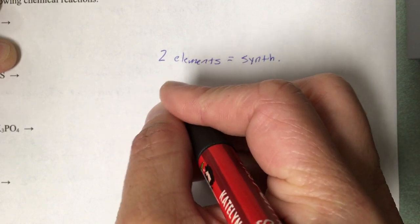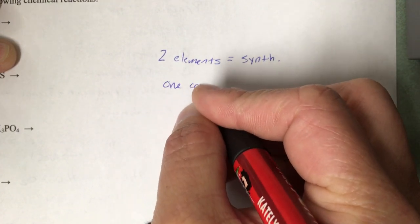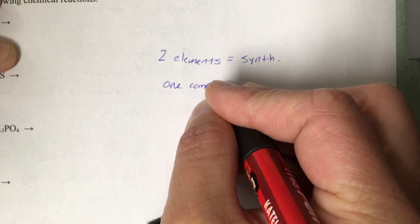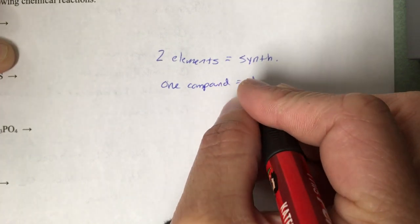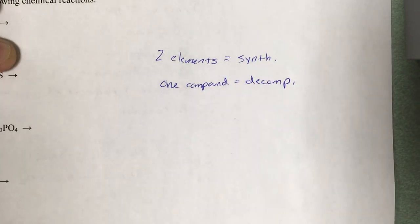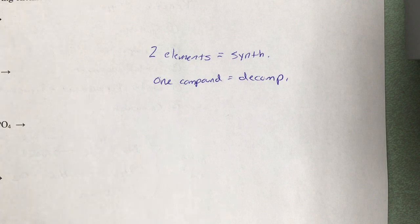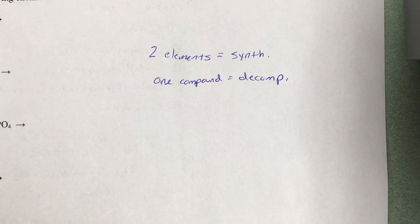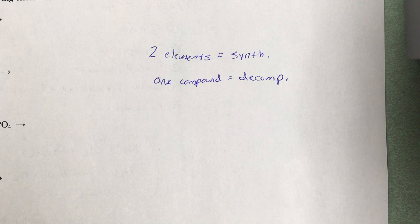If I give you one compound, then it's decomposition, and you're going to break that compound down into two simpler substances. A lot of times it is just separating them back down into their elements again. You write down what the two elements are, put a plus sign between them, and then watch out for those diatomic elements. So like if it's chlorine, you have to put Cl2.